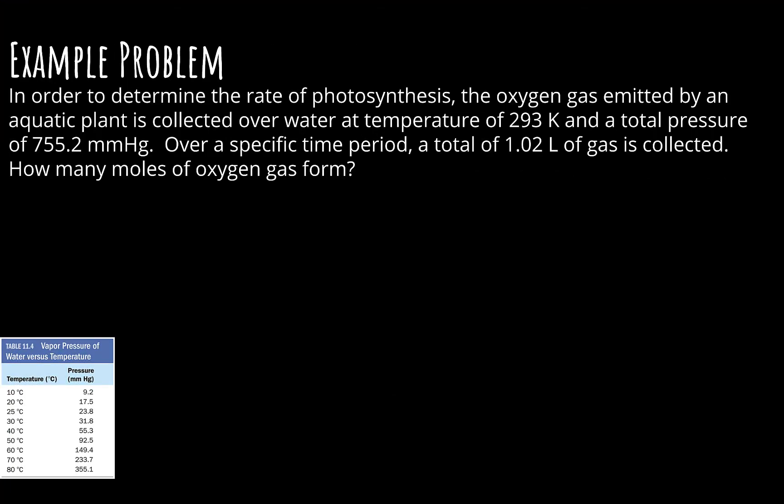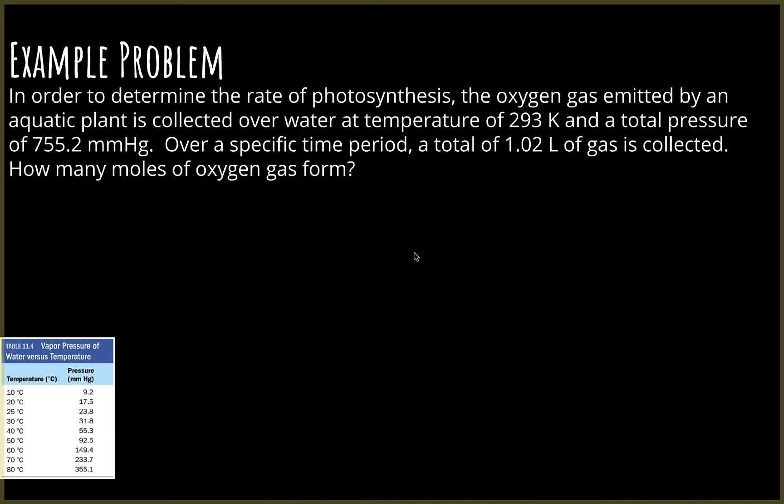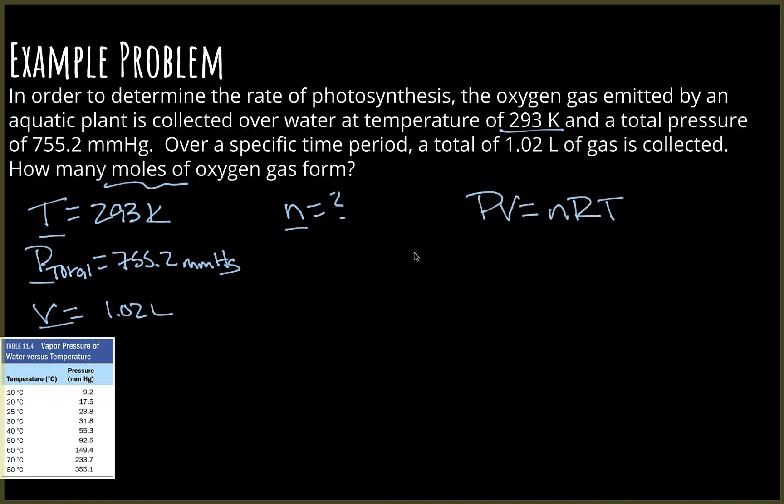So this one says, in order to determine the rate of photosynthesis, the oxygen gas emitted by an aquatic plant is collected over water at a temperature of 293 K and a total pressure of 755.2 millimeters of mercury. You may have done an experiment like this last year where you were looking at the rate of photosynthesis. So I'm still going to list my variables. There was a temperature of 293 Kelvin, a total pressure of 755.2 mmHg, and then a total of 1.02 liters of gas was collected. This wants to know how many moles of oxygen gas form. If you look at the variables here, T, V, P, and N, this should tell you that you're going to need PV equals NRT to solve for moles.